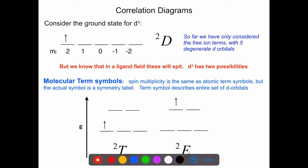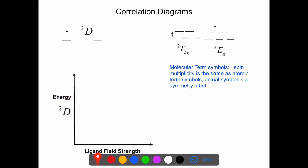If we want to talk about the electronic transition, we write it as doublet EG, then draw an arrow to that EG state from the doublet T2G. Typically when you write these electronic transitions, you put the higher energy orbital first and the arrow shows the direction of electron movement - this would be an excitation. Now, about that correlation diagram.